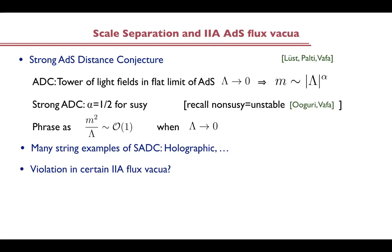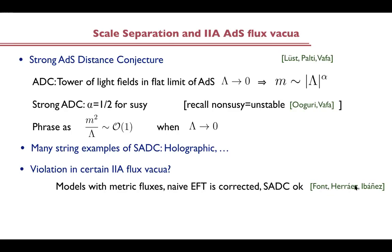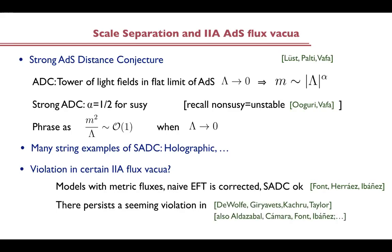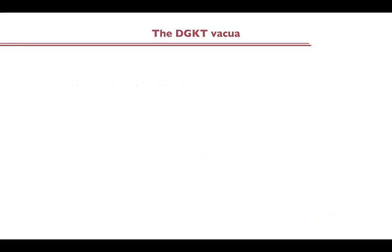There are some models with metric fluxes which seem to violate this conjecture, but DeWolfe and Ibáñez showed that the naive effective field theory is corrected — when you take into account the back reaction of the metric fluxes on the geometry, the strong ADC is satisfied. There seems to be an apparent violation in some models worked out by DeWolfe, Giryavets, Kachru and Taylor, and also Ibáñez and collaborators. We call this kind of vacua DGKT and will focus on them to see what can be done. These examples do violate the strong ADC, but in a very interesting way related to the Z_K symmetry, suggesting some kind of refinement of the strong ADC.